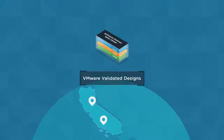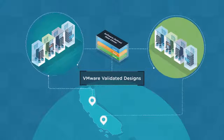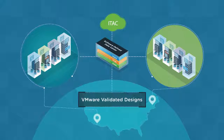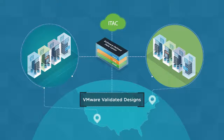Examples of regions include separate data centers in northern and southern California, or separate data centers on the west and east coasts of the United States. The IT Automation Cloud Validated Design supports a dual region layout, with each region comprising a single availability zone.